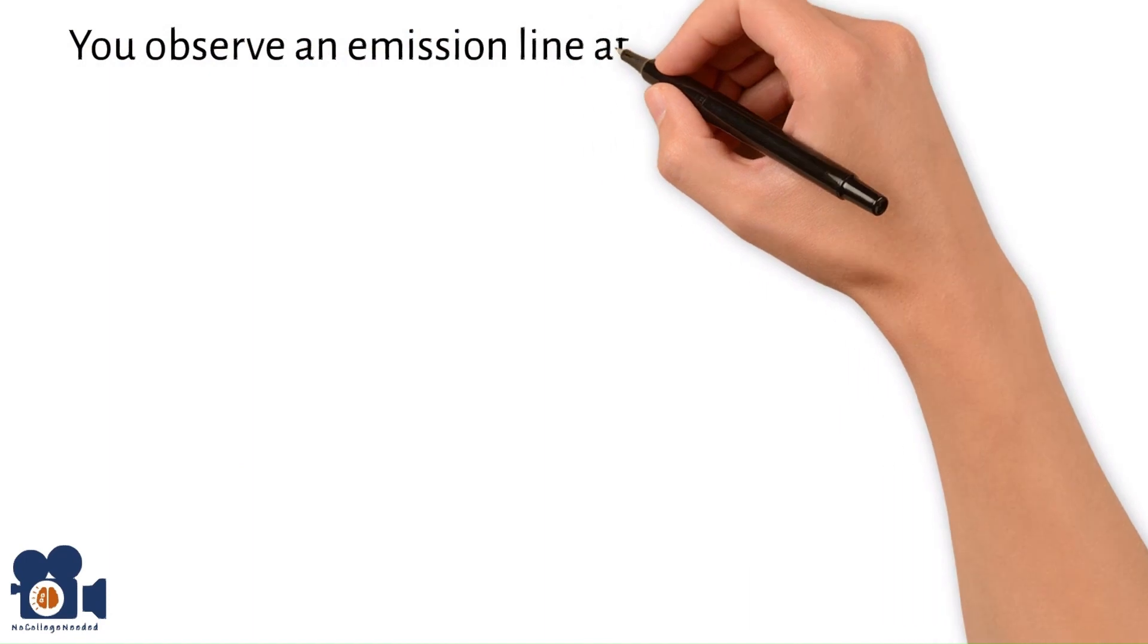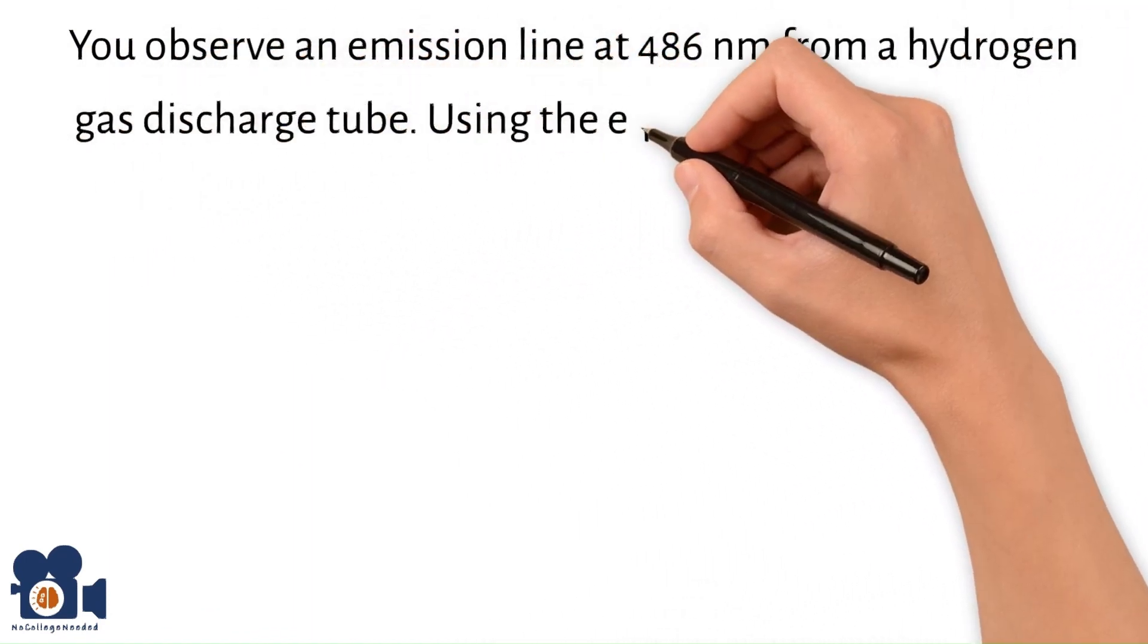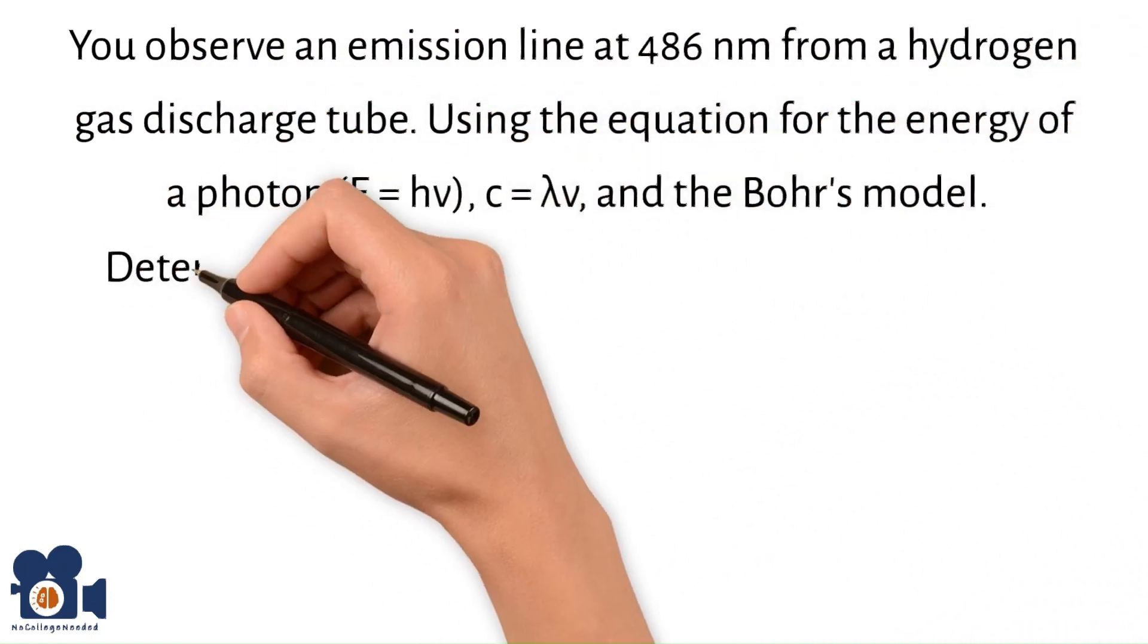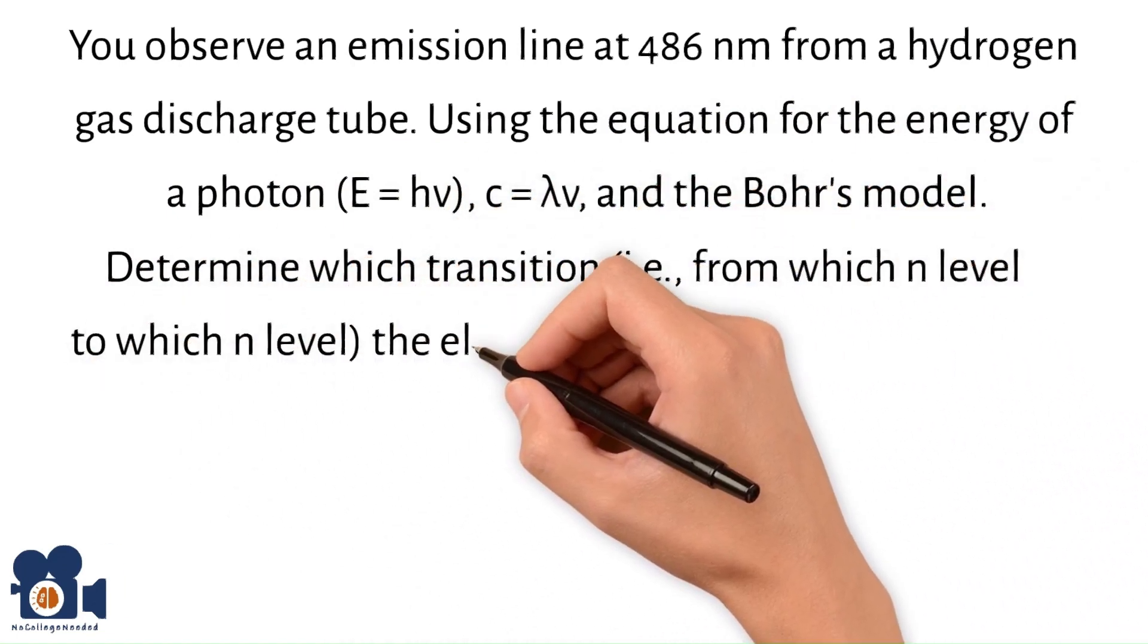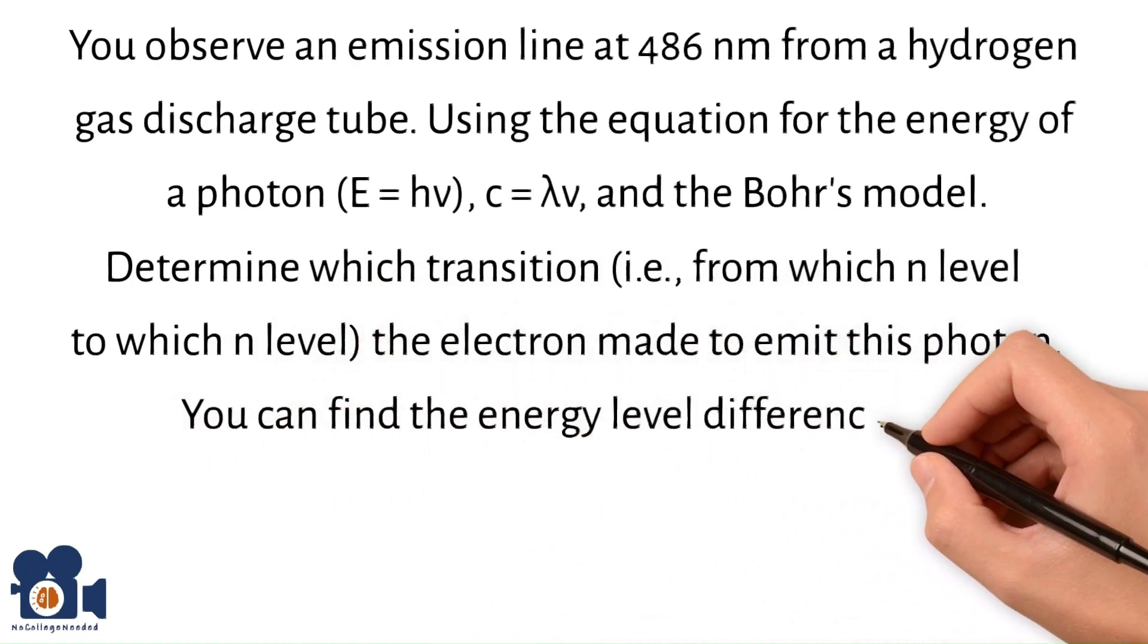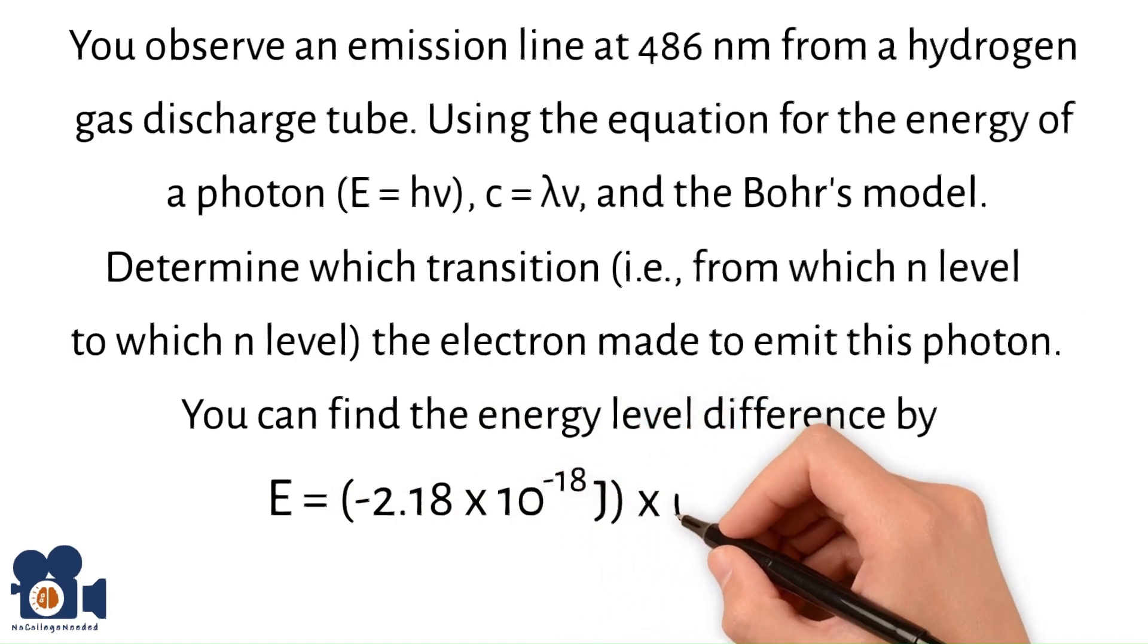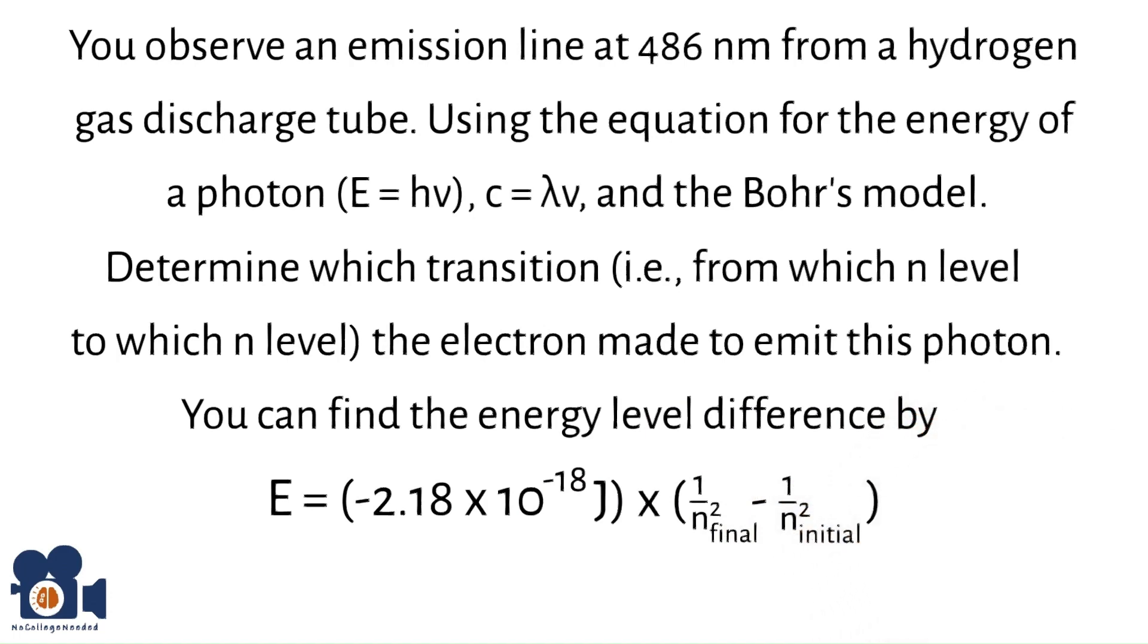You observe an emission line at 486 nanometers from a hydrogen gas discharge tube. Using the equation for energy of a photon, E equals hν, c equals lambda nu, and the Bohr model, determine which transition, from which n level to which n level, the electron made to emit this photon. You can find the energy level difference by E equals negative 2.18 times 10 to the negative 18th joules, times 1 divided by n squared final, minus 1 divided by n squared initial.